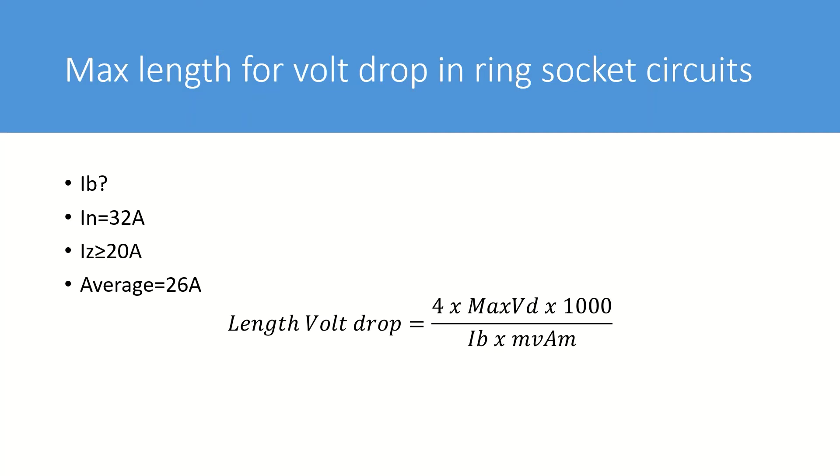Where a ring circuit is installed in accordance with appendix 15 of BS7671, a 2.5 mil cable can be protected by a 32 amp protective device provided that the current does not exceed 20 amps in each leg of the ring. However 20 amps isn't a design current.